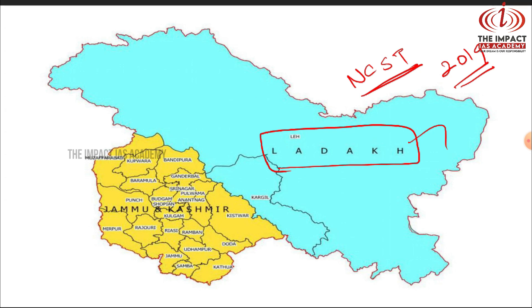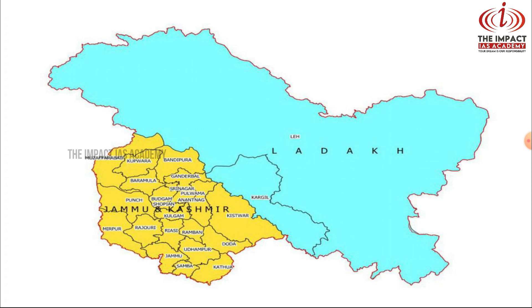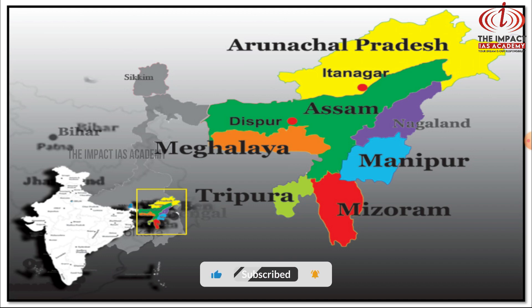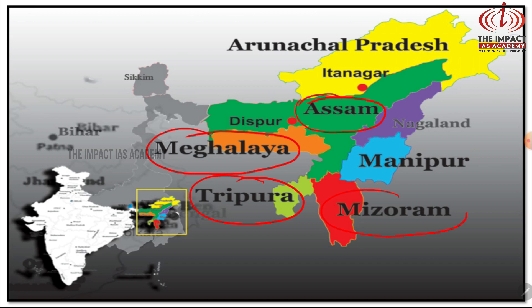Let's look at the areas already included in the Sixth Schedule. Presently there are four states included under the Sixth Schedule of our Constitution: one is Assam, the second is Meghalaya, then Tripura, and then Mizoram. These are the four states currently covered under the Sixth Schedule.